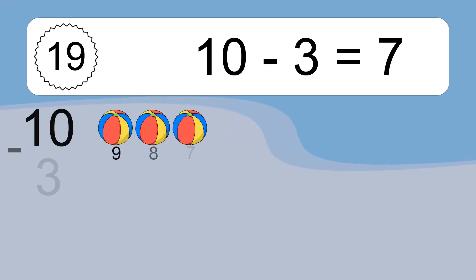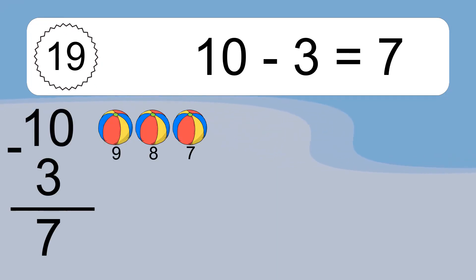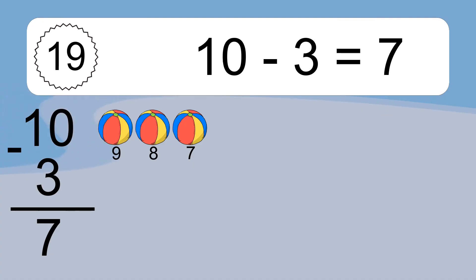10 minus 3 equals what? 10 minus 3 equals 7. Let's count it: 9, 8, 7.